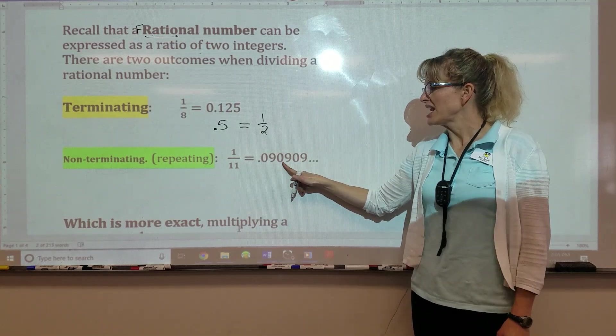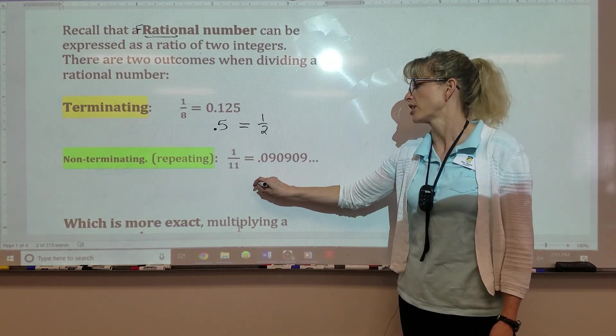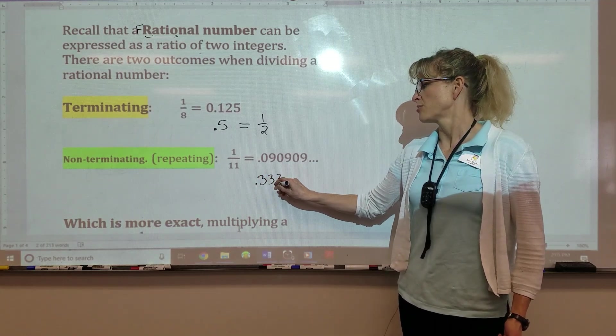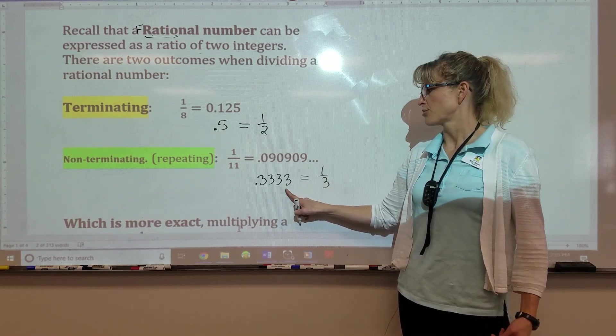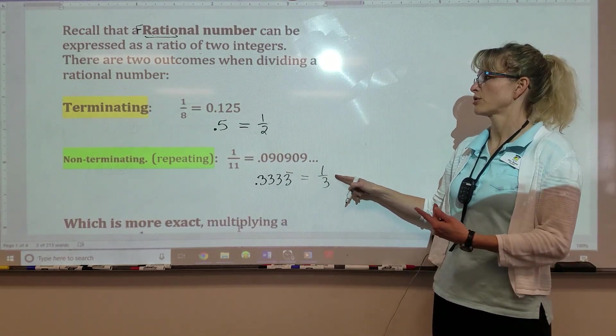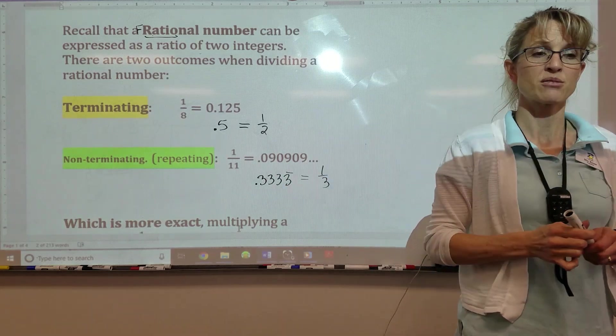A repeating decimal can also be turned into a rational number. If it helps you remember, I think of this common one. We've memorized this one as one third. Well, this is a repeating decimal, and it can be turned into a rational number. So this is also a rational number, a repeating decimal.